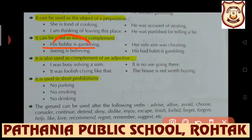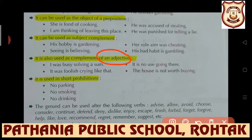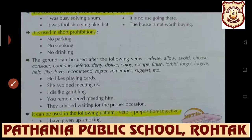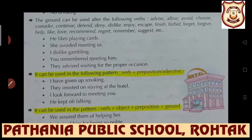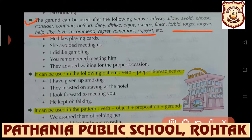The gerund is also used as complement of an adjective: 'I was busy solving a sum' - the person is busy to solve a sum. It is also used in short provisions - things we are forbidden to do. The gerund can be used after the following verbs: after these verbs, first form plus '-ing' can be used. 'He likes playing', 'She avoided meeting', 'I dislike gambling' - after these verbs, a gerund can be used.